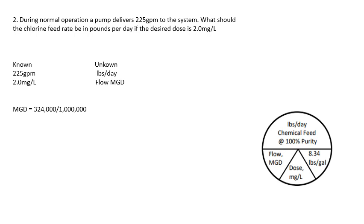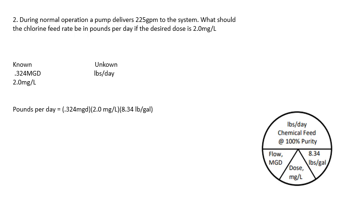Convert 324,000 gallons per day to million gallons per day by dividing by 1,000,000. So now you know 0.324 million gallons per day and 2 milligrams per liter, and you're still looking for pounds per day. Pounds per day equals 0.324 MGD times 2 milligrams per liter times 8.34 pounds per gallon. You get 5.40 pounds per day.